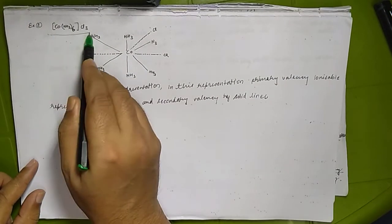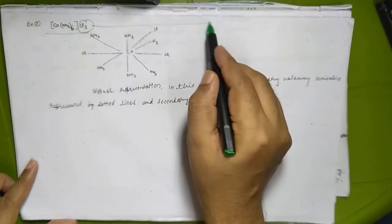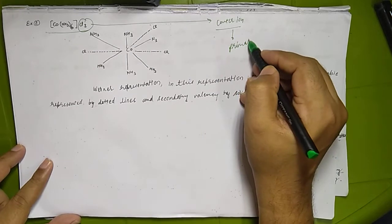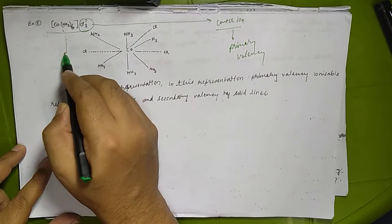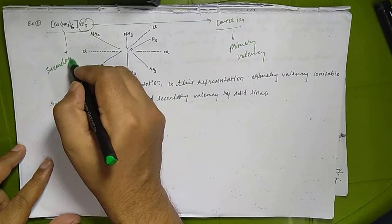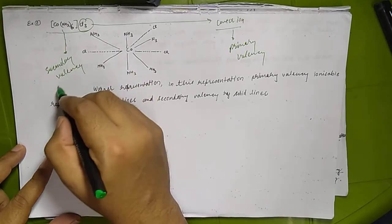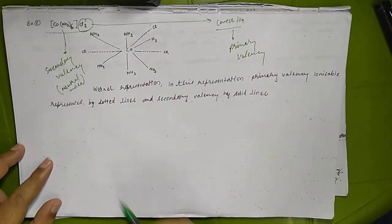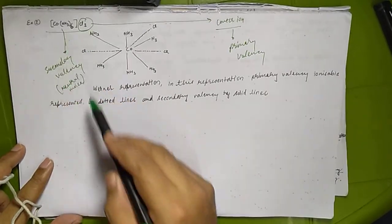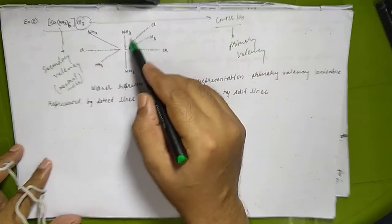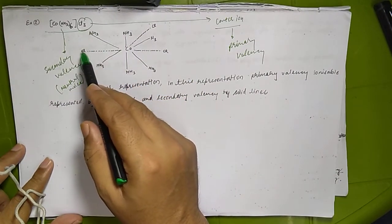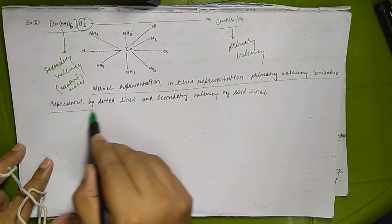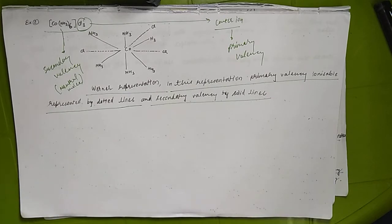In Co(NH₃)₆Cl₃, whatever is outside the sphere represents the counter ion, which represents the primary valency. The NH₃ molecules inside the sphere represent the secondary valency — they are neutral molecules represented by solid lines. The 3 Cl outside are represented by dashed lines as primary valency. In Werner's representation, primary valency is ionizable and shown by dotted lines, and secondary valency is shown by solid lines.